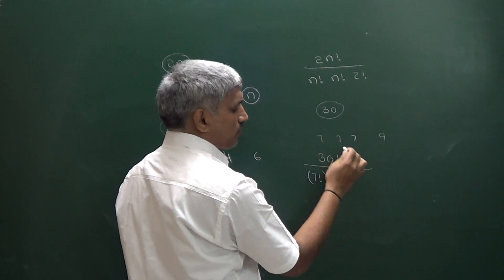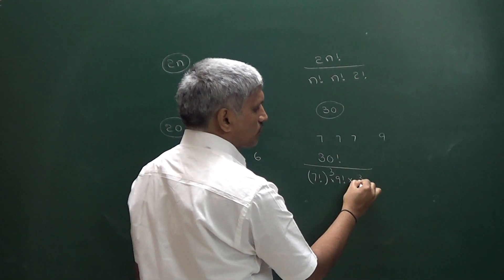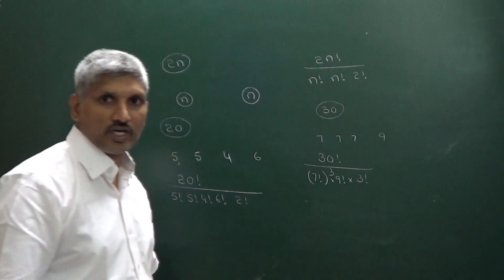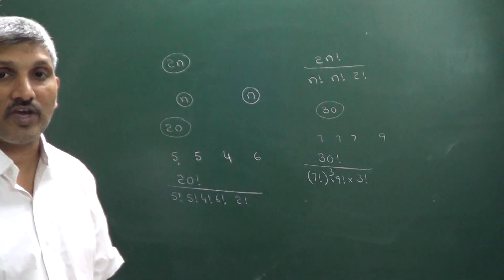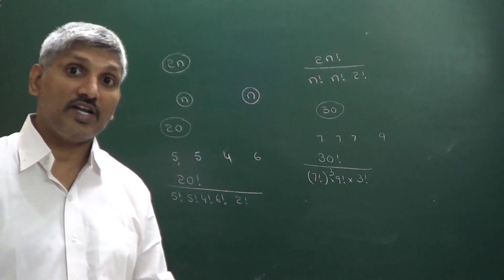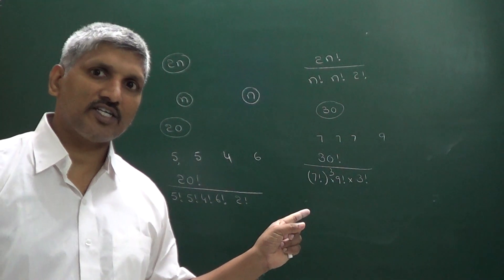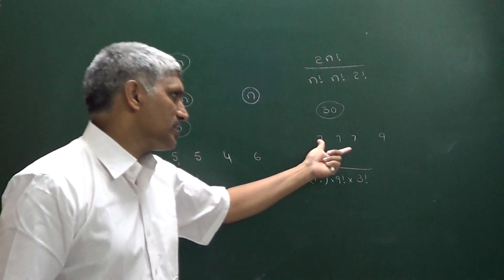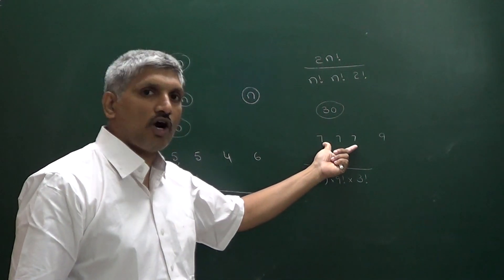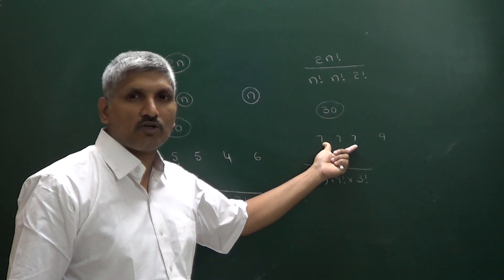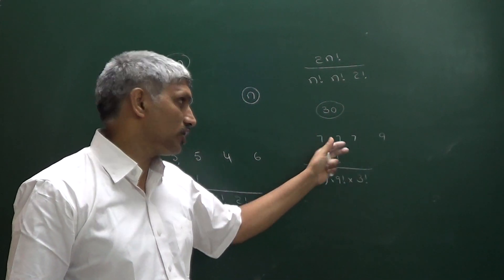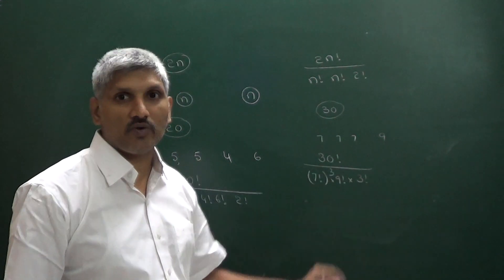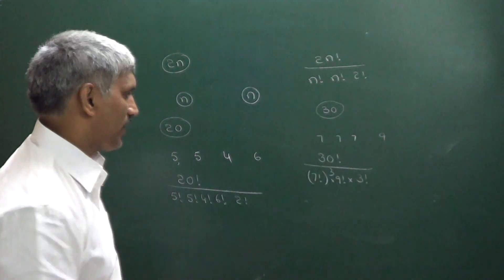This can be divided as 30 factorial divided by 7 factorial cubed into 9 factorial. Because we have 3 equal groups of 7, we divide by 3 factorial. So that is the way of division of items into groups. When there are equal groups, observe how many equal groups there are and divide by that factorial.